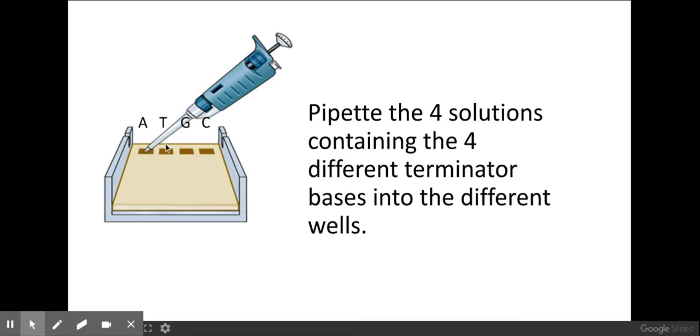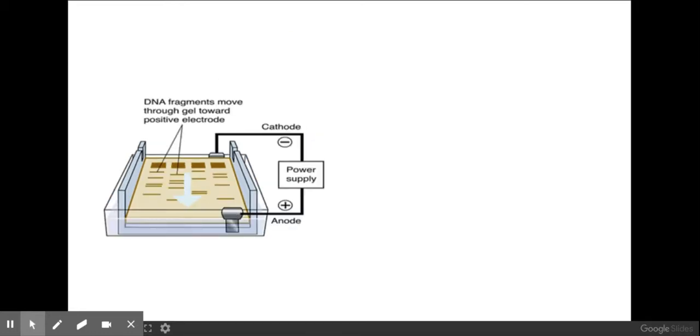So in here I'm going to have terminator A, then terminator T, terminator G, and then terminator C. Now depending upon what you're separating, that might be something else completely, but if it's at the end of sequencing, that's what you'd be putting in each of your wells. Once you've put whatever you're separating into the wells, you then need to pass a current through it.